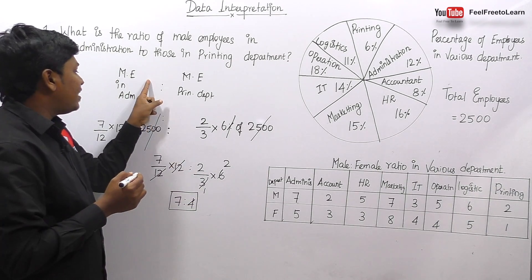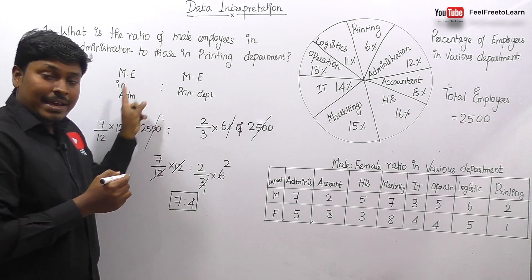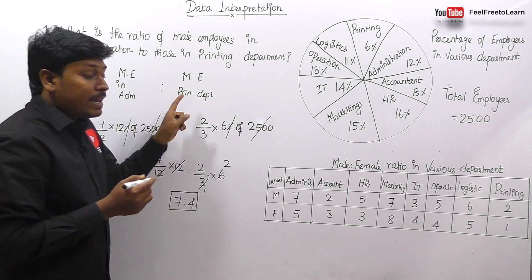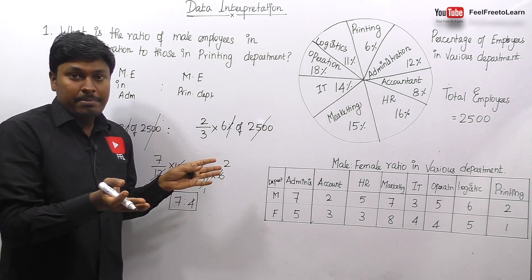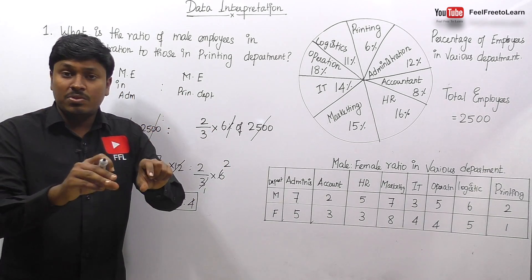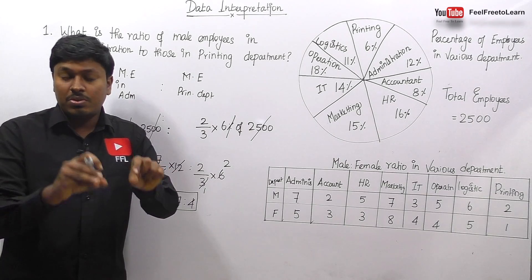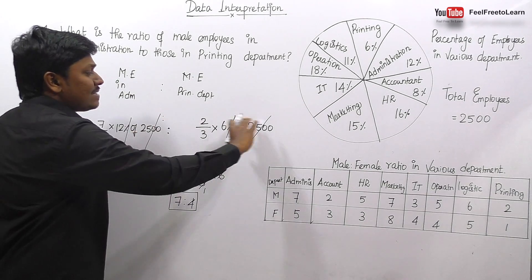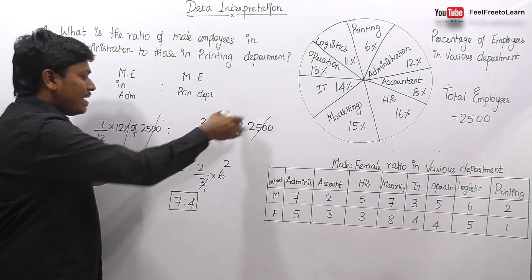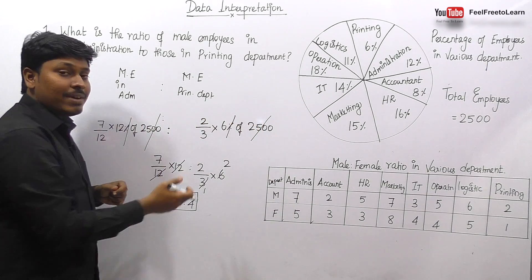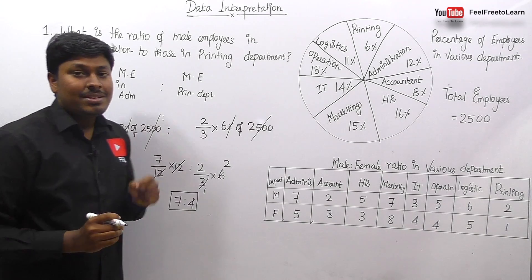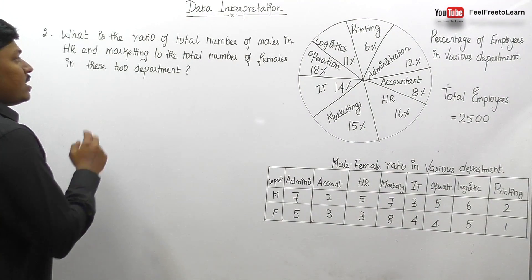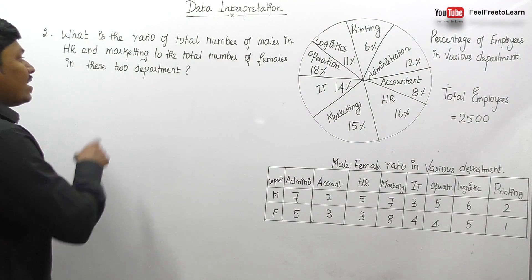This question is very easy if you properly follow the method. Don't calculate male employees in Administration and Printing separately and then find the ratio. Just write everything in a single step so you can easily cancel all the values. Finally, the ratio is 7:4.